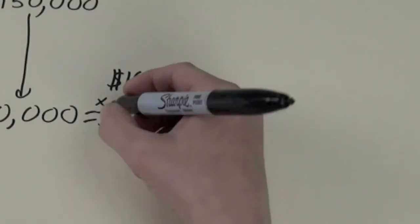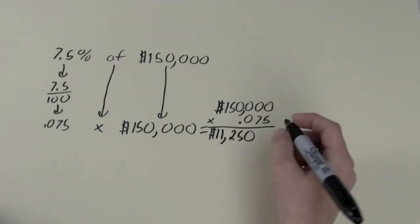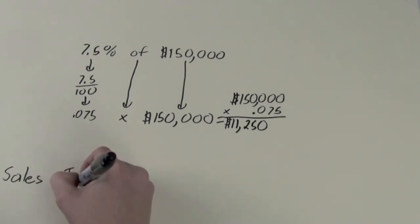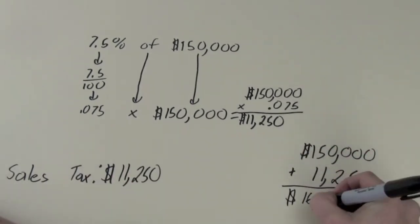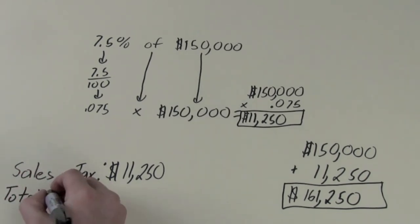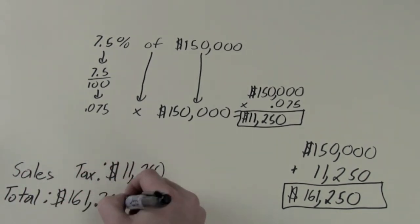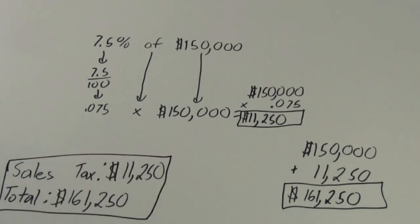Of means to multiply, so multiply by $150,000. $11,250 is your tax. Now add this to the original price and you will have a total of $161,250. Thanks for watching!